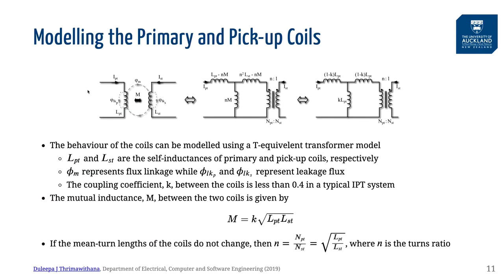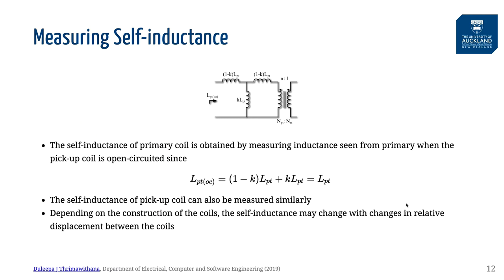Let's first model the behavior of the primary and the pickup coils of an IPD system. Assume we know the self inductances of the coils as well as the mutual inductance between them, which are related through the coupling factor. We can use this information and the T equivalent model of a transformer to represent the two coils as shown. The self inductance can be measured using an LCR meter by measuring the inductance of each coil while the other coil is open circuited.